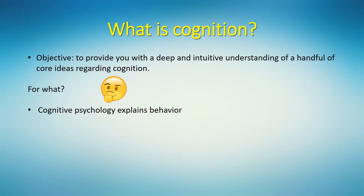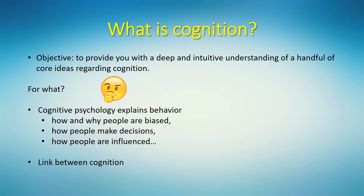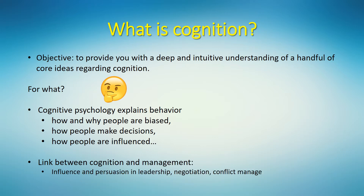Specifically, cognitive psychology explains how and why people are biased, how people make decisions, how people are influenced, and a lot more. And of course, there is a very clear link between cognition and management. For example, the topic of influence and persuasion is heavily based on the theory of cognition — that can be in the context of leadership, but also negotiation, conflict management, and even marketing and advertising.